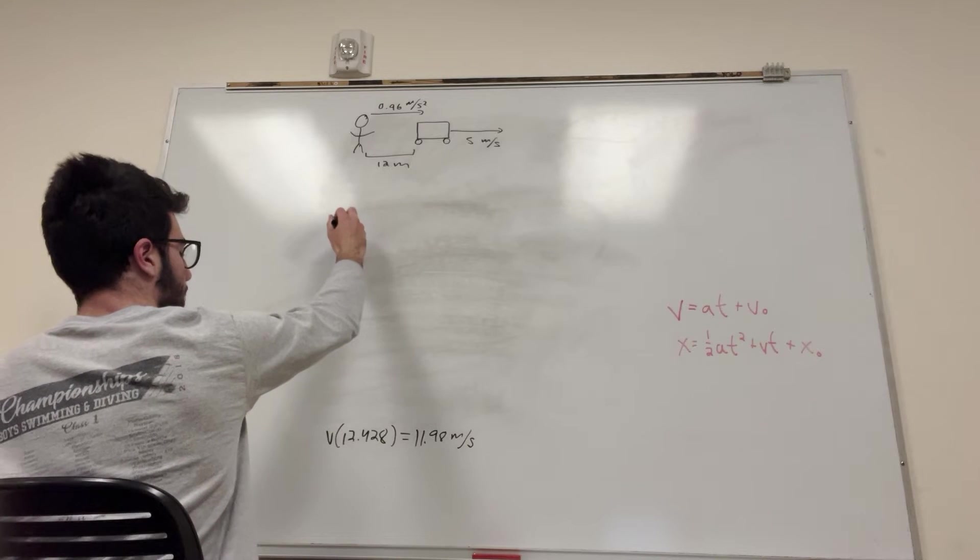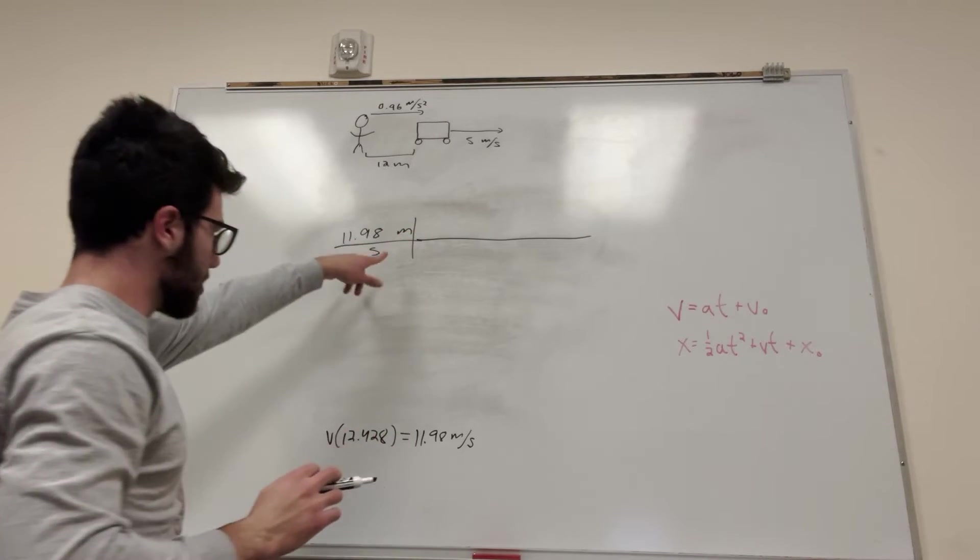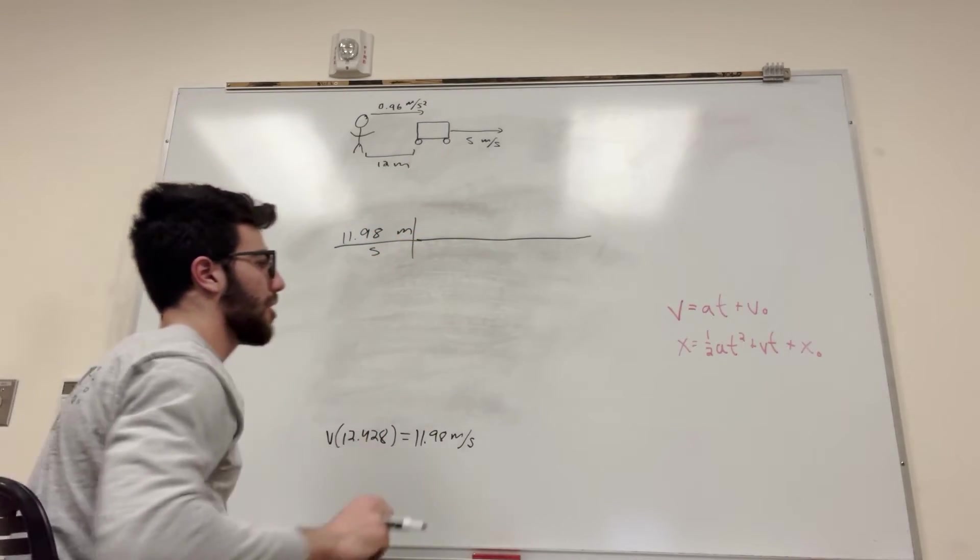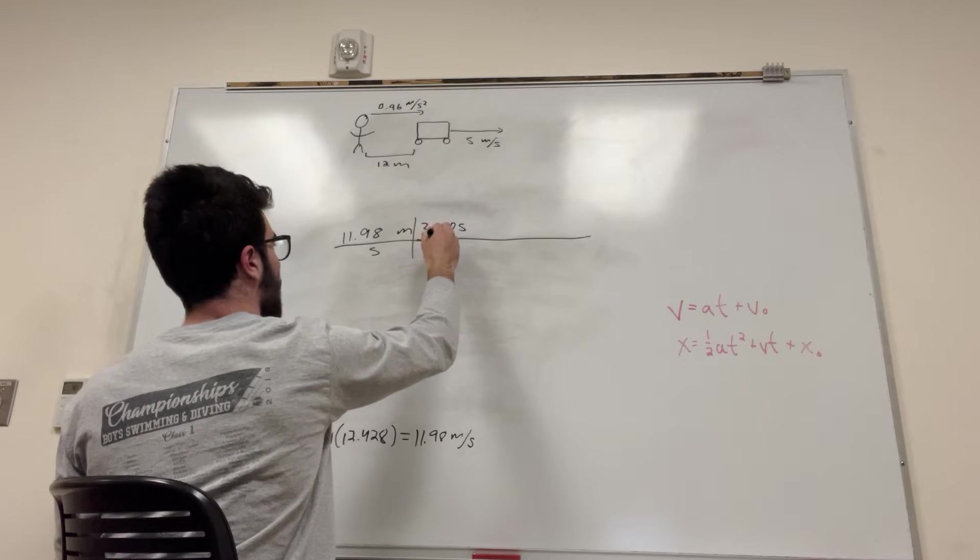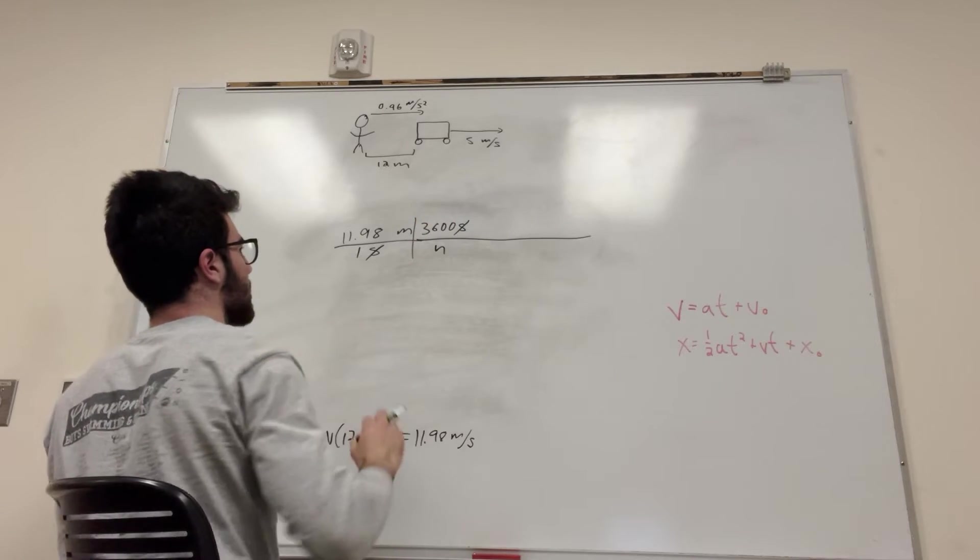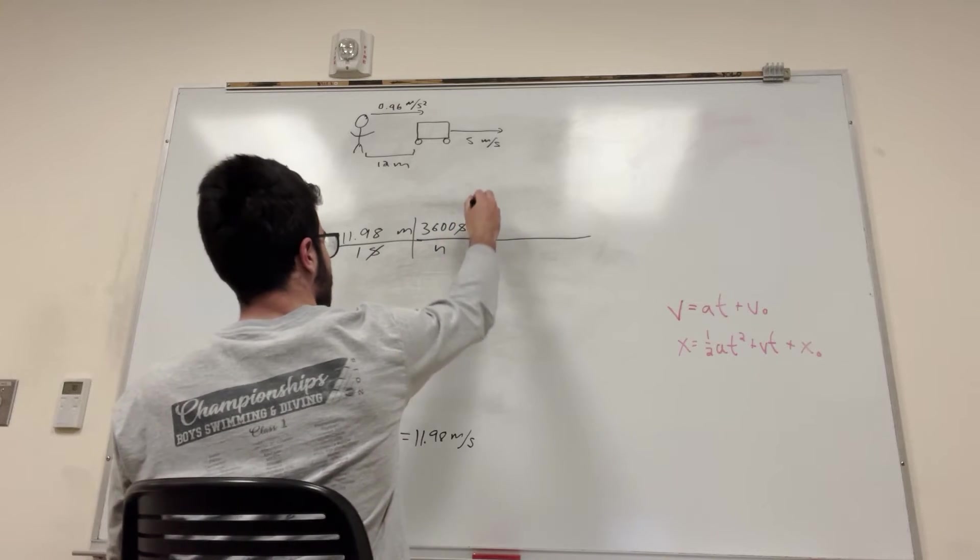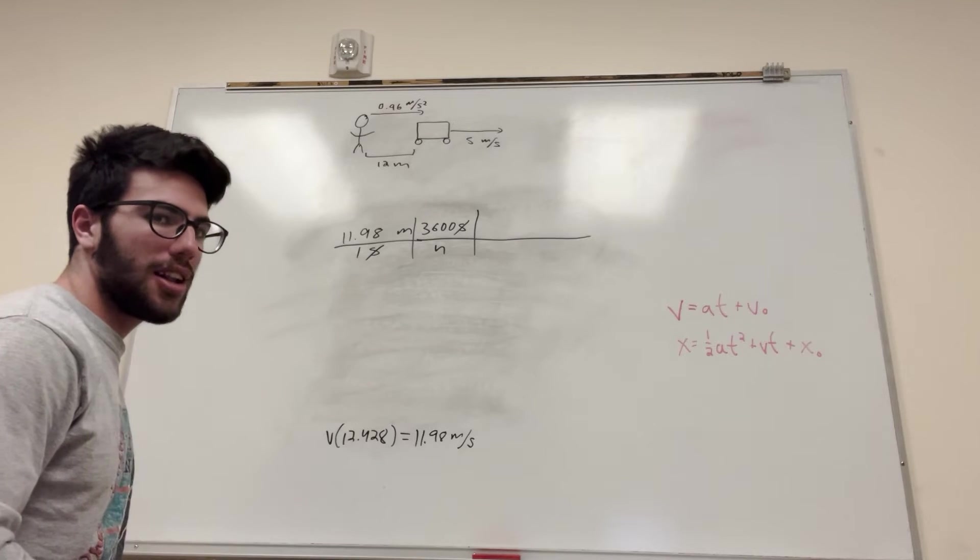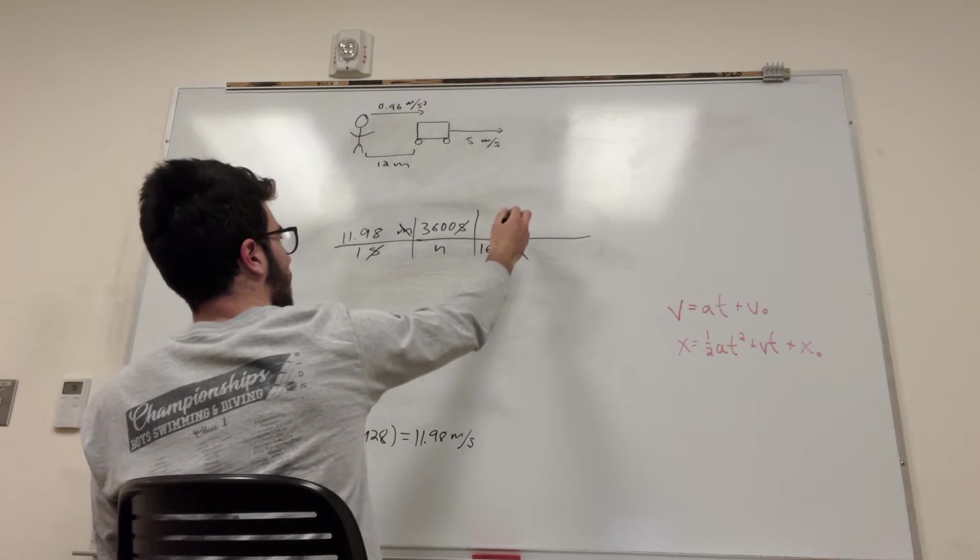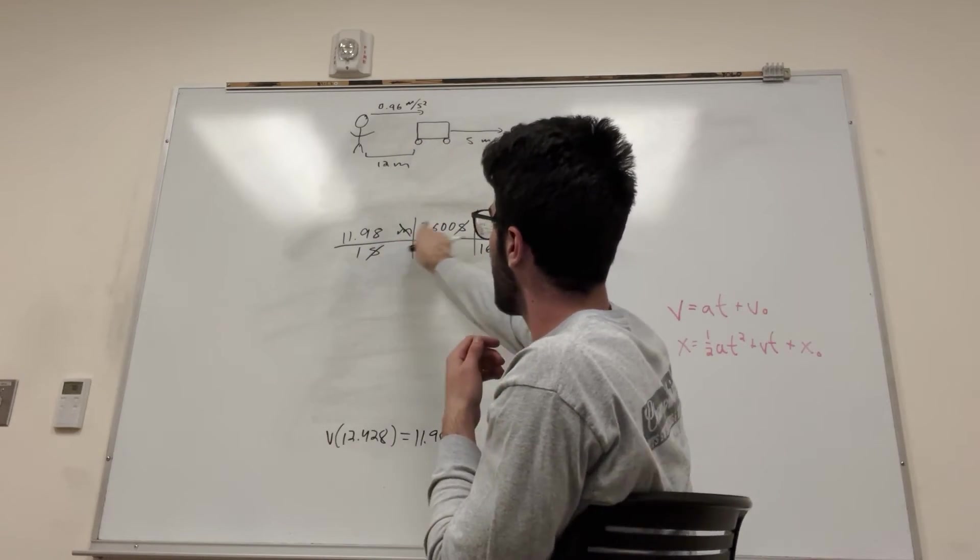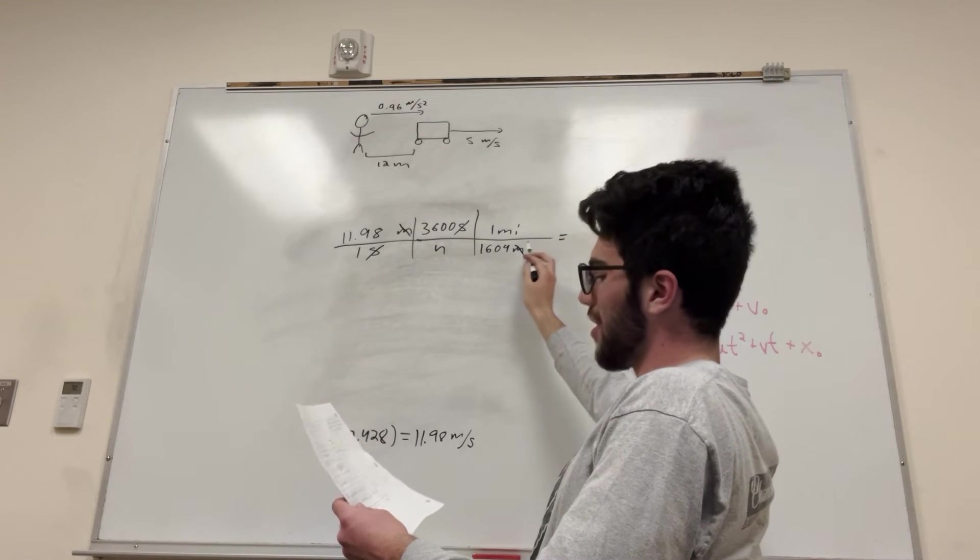So we have 11.98 meters per second. Let's start a chart. We want to cancel out what we got. There is 3,600 seconds per hour, so we have 3,600 seconds per one hour. Then we have to cancel out the meters. We have 1,609 meters per one mile, and the meters cancel out and we end up with miles per hour. So we multiply this by this and divide it by that. 11.98 times 3,600 divided by 1,609 equals 26.8 miles per hour.